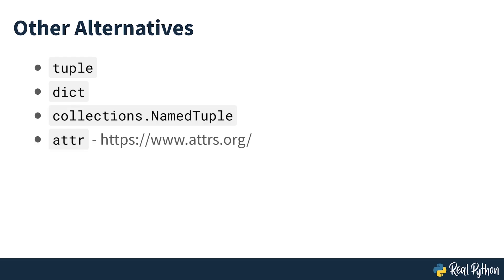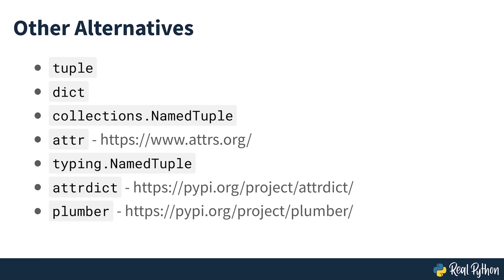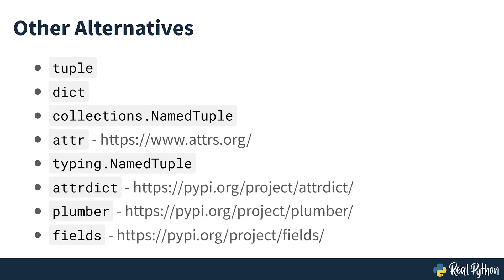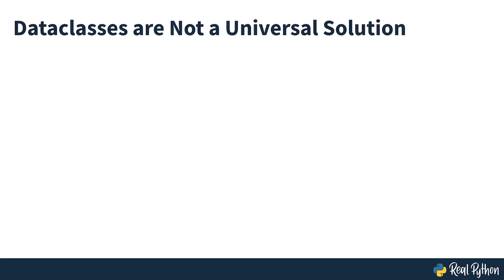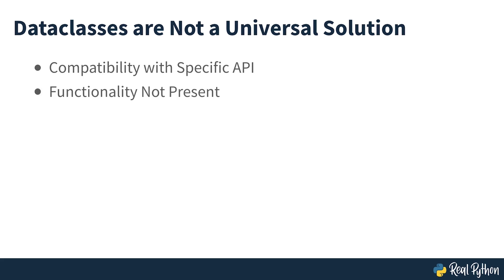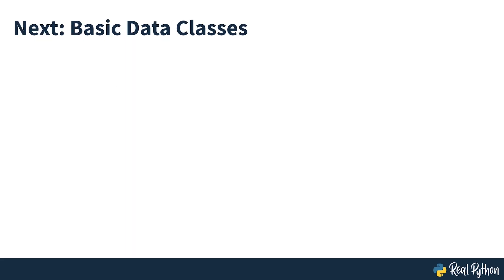In addition to tuple, dict, named tuple, and attrs, there are other similar projects including typing.NamedTuple, AttrDict, plumber, and fields. While data classes are a great feature, there are still use cases where one of the older variants fits better. For instance, if you need compatibility with a specific API expecting tuples, or need functionality not supported in data classes. Now that you've seen what the alternatives may be, in the next chapter you'll get back to implementing data classes, starting with a simple example.